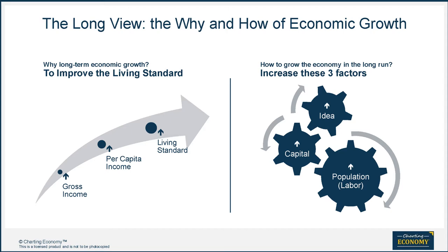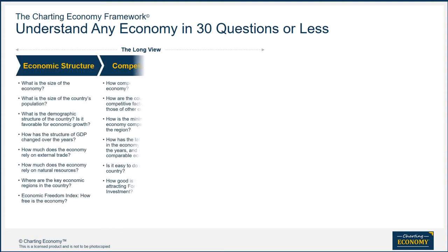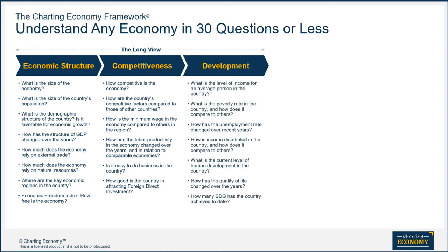What about spectators like us? We can ask questions that can give us clues to assess those three factors and the results on people's well-being. In the long view, our framework divides the questions into three groups: economic structure, competitiveness, and development. Development is the eventual result of long-term growth that is in turn driven by economic structure and competitiveness.